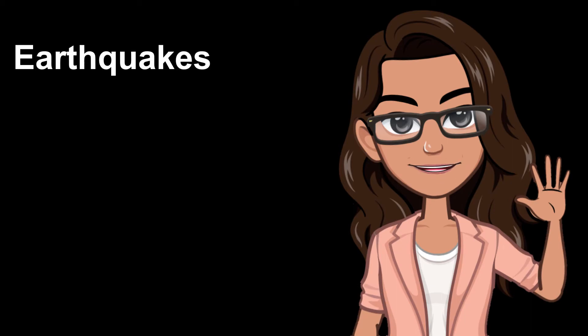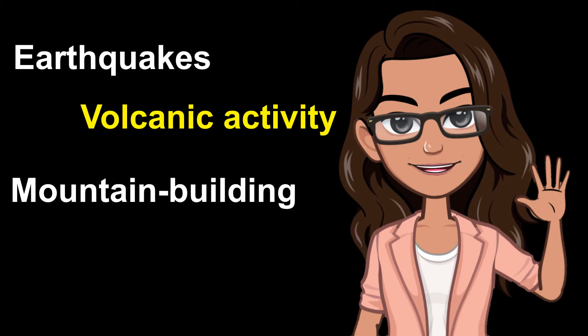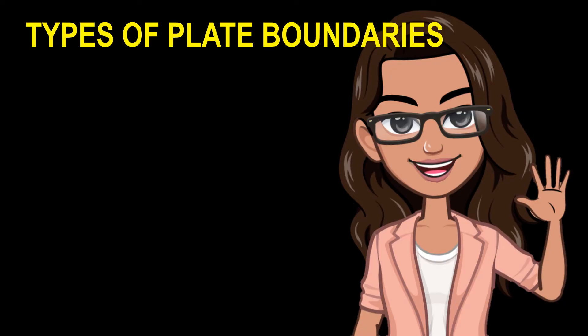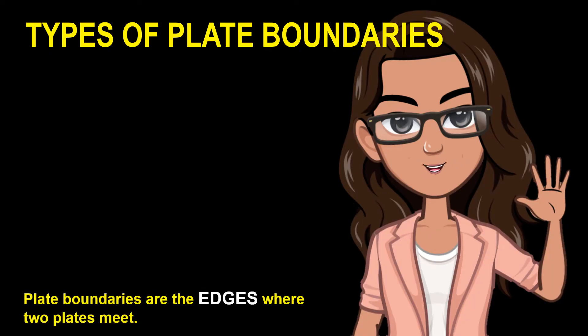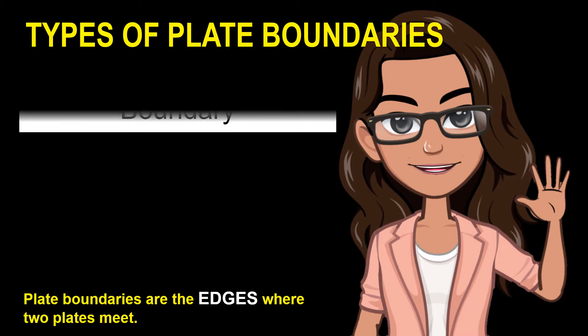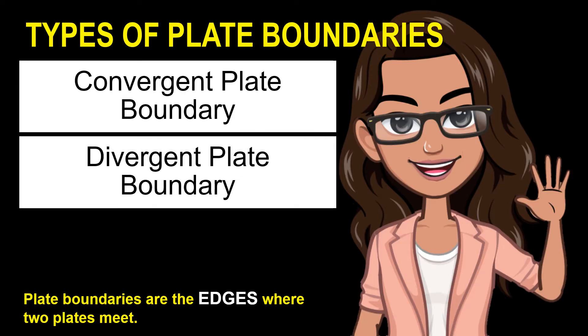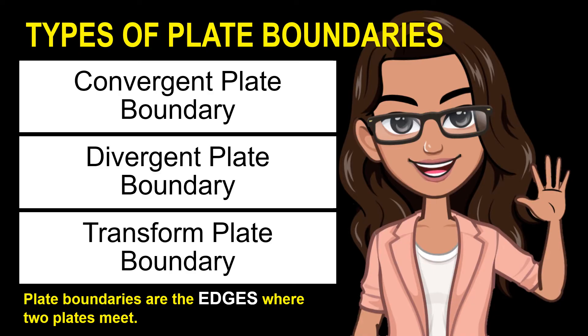Earthquakes, volcanic activity, mountain building, and oceanic trench formation occur along plate boundaries in zones that may be anything from a few kilometers to a few hundred kilometers wide. There are three main types of plate boundaries. Remember that plate boundaries are the edges where two plates meet. These types are convergent plate boundary, divergent plate boundary, and transform plate boundary.